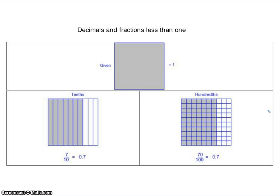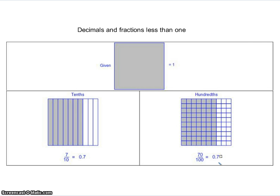We want to model the decimal 0.7 or the fraction seven tenths using our base ten blocks. To make that, we would break it into ten longs, each one being worth one tenth. To show seven tenths, I would shade in seven of those. Here, I'm trying to model seventy hundredths. You might say that's seven tenths — you're right — but we can write a zero on here and it doesn't change its value, so that can be pronounced seventy hundredths. I would break my flat into hundredths — the tiny little unit pieces — and shade in seventy of them to show seventy hundredths.